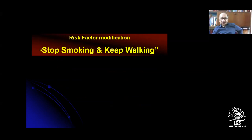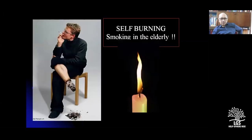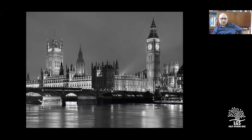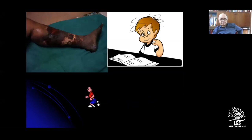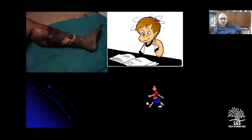The best risk factor modification is to ask the patient to stop smoking and keep walking — not the other way around. Smoking in the elderly is like self-burning of the limb by cigarettes. The entire limb is dark because there is no perfusion. Skin necrosis of an ischemic limb with foot gangrene needs a below-knee (BK) amputation.